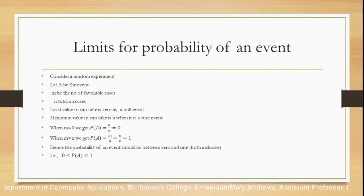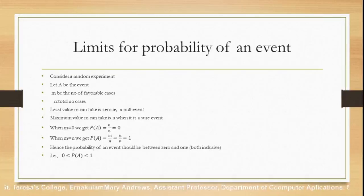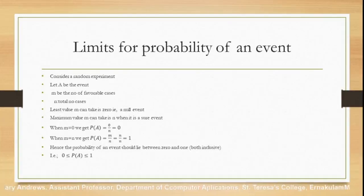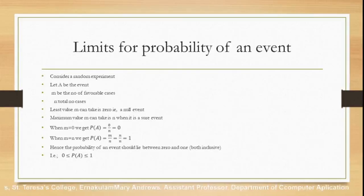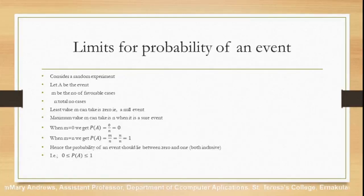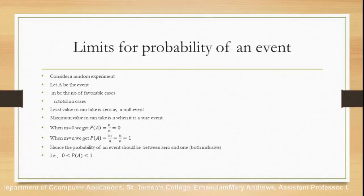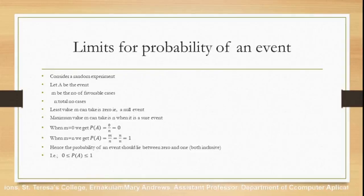When m equals 0, P(A) = 0/n = 0, giving us the lower limit of zero. When m equals n, P(A) = m/n = n/n = 1, giving us the upper limit of one. Therefore the probability of an event must lie between 0 and 1, both inclusive. Mathematically: 0 ≤ P(A) ≤ 1.